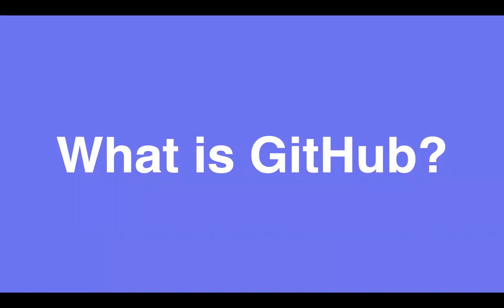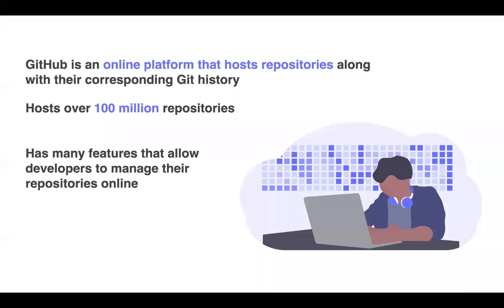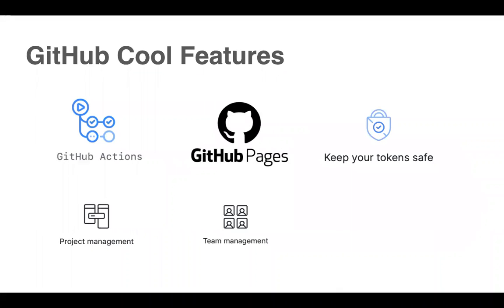GitHub is a separate thing entirely from git. GitHub is a git repository hosting service, but it has many of its own features. While git is a command line tool, GitHub provides a web-based repository hosting service. GitHub is not just a simple site — it has other capabilities such as GitHub Actions, which allow you to do continuous integration using a configuration file, build and deploy your code right from GitHub, and GitHub Pages, which allows you to host your website for free.